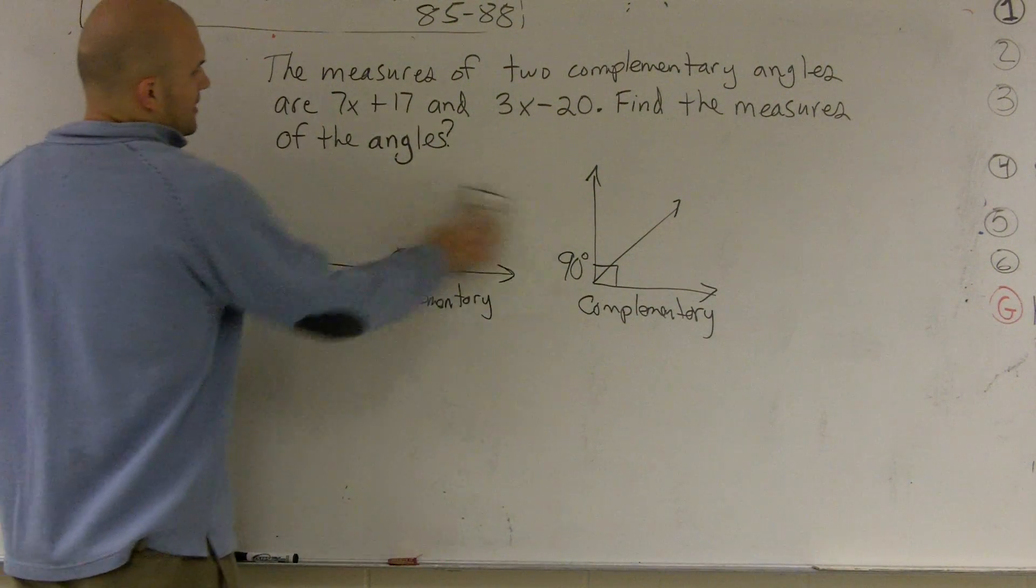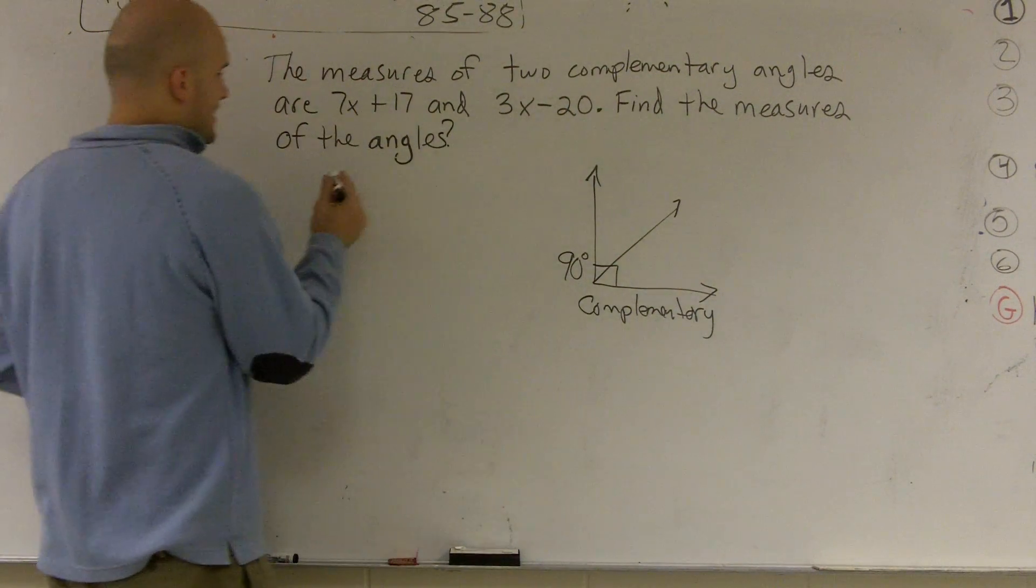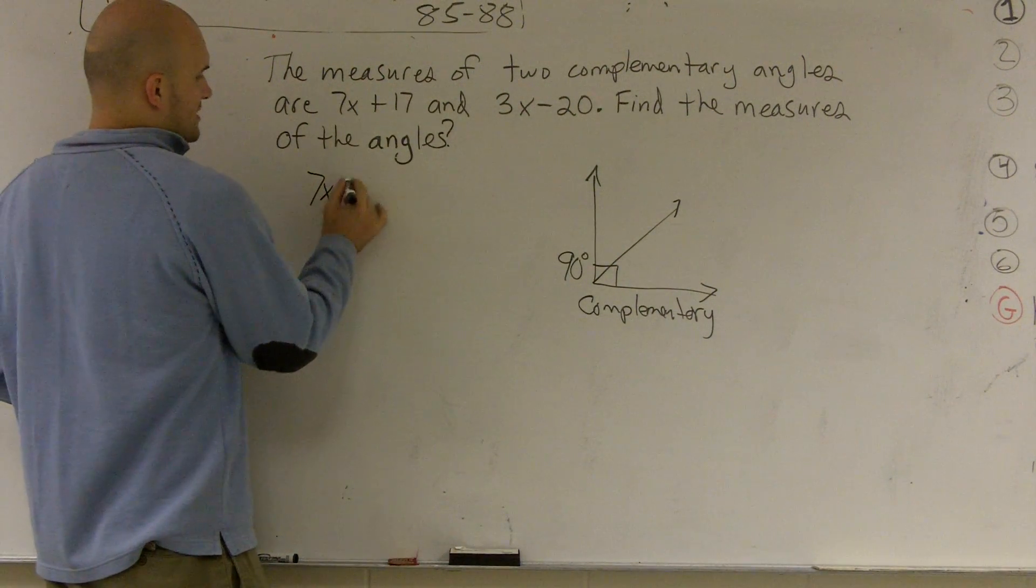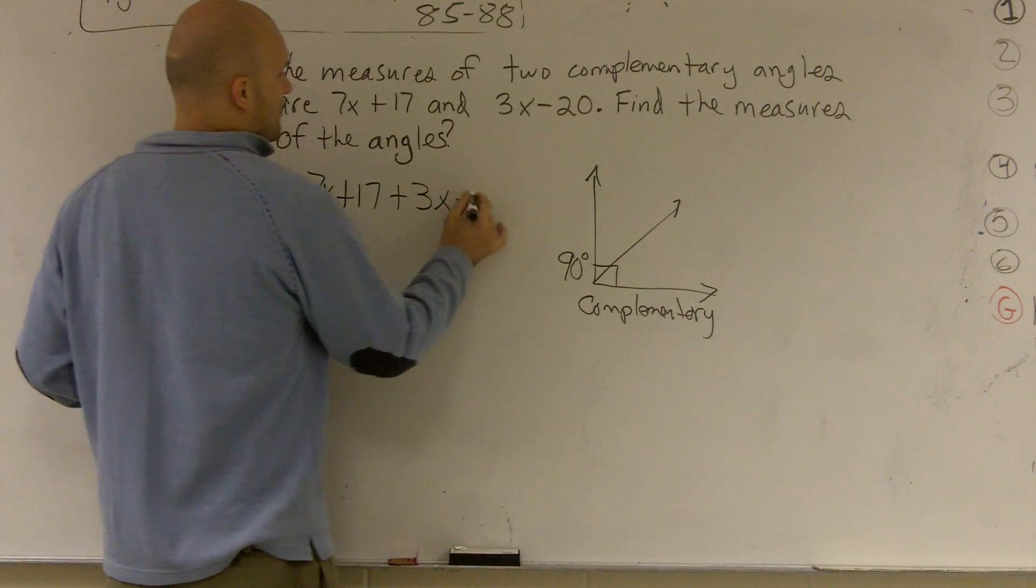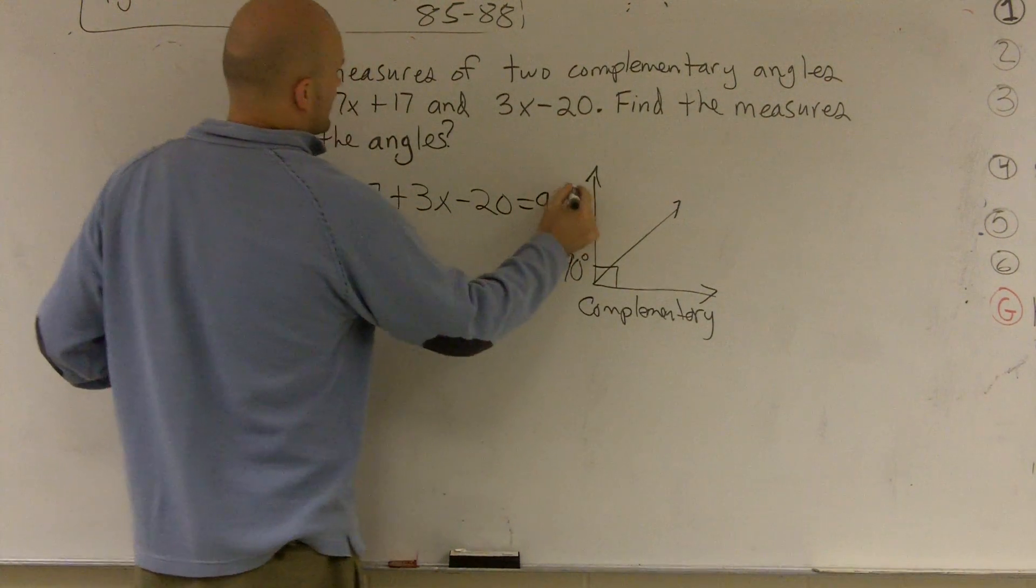So remember, since we know that they're going to look like this, they're going to add together 7x plus 17 plus 3x minus 20 equals 90 degrees.